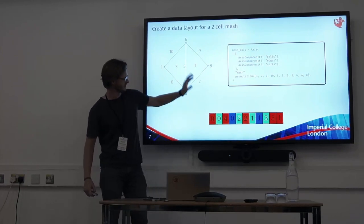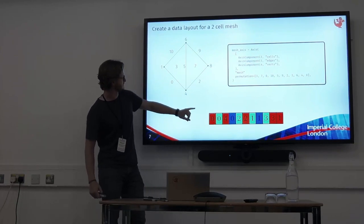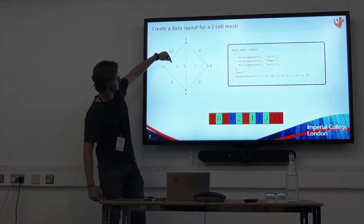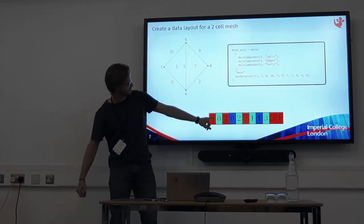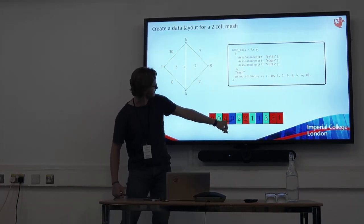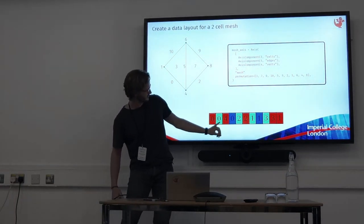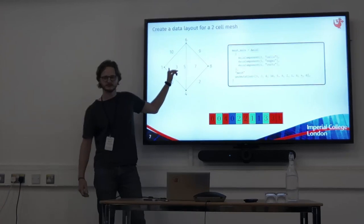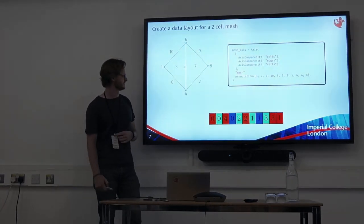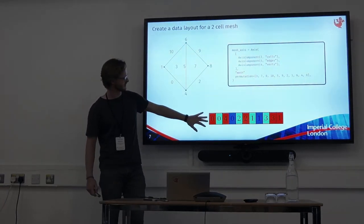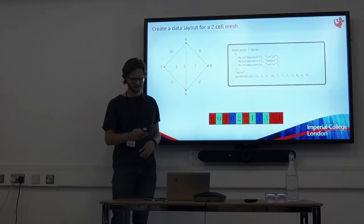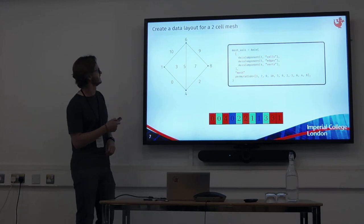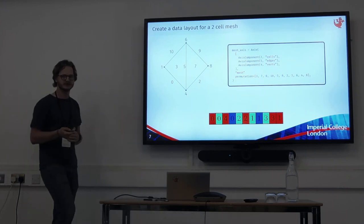The numbering is a bit confusing, but for example, cell zero — the blue zero — is in the fourth slot, so it's number three if we're using zero-based indexing. That's a data layout for a two-cell mesh.